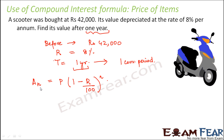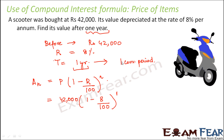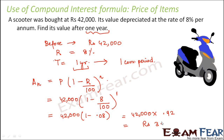So An is the amount after n years — the value we need to find. P is the initial principal, which is 42,000. Into 1 minus 8 by 100 to the power 1 — because you have one conversion period. This equals 42,000 into 1 minus 0.08, which is 42,000 into 0.92, giving Rs. 38,640. So this would be the price of the scooter after one year.